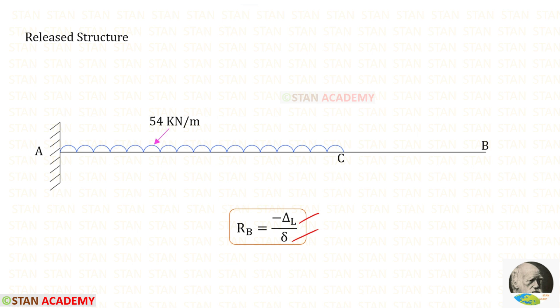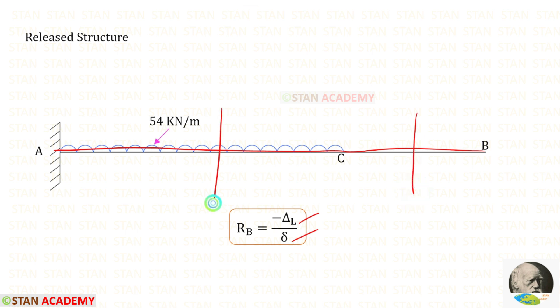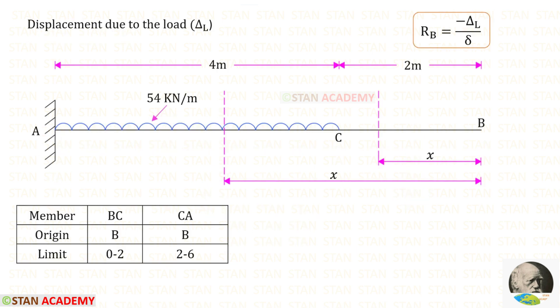In the unit load method, we have to make sections. In this beam, there are 2 different parts: BC and CA. So we have to make 2 sections — one in BC and one in CA. I have made both sections at a distance of x from point B.